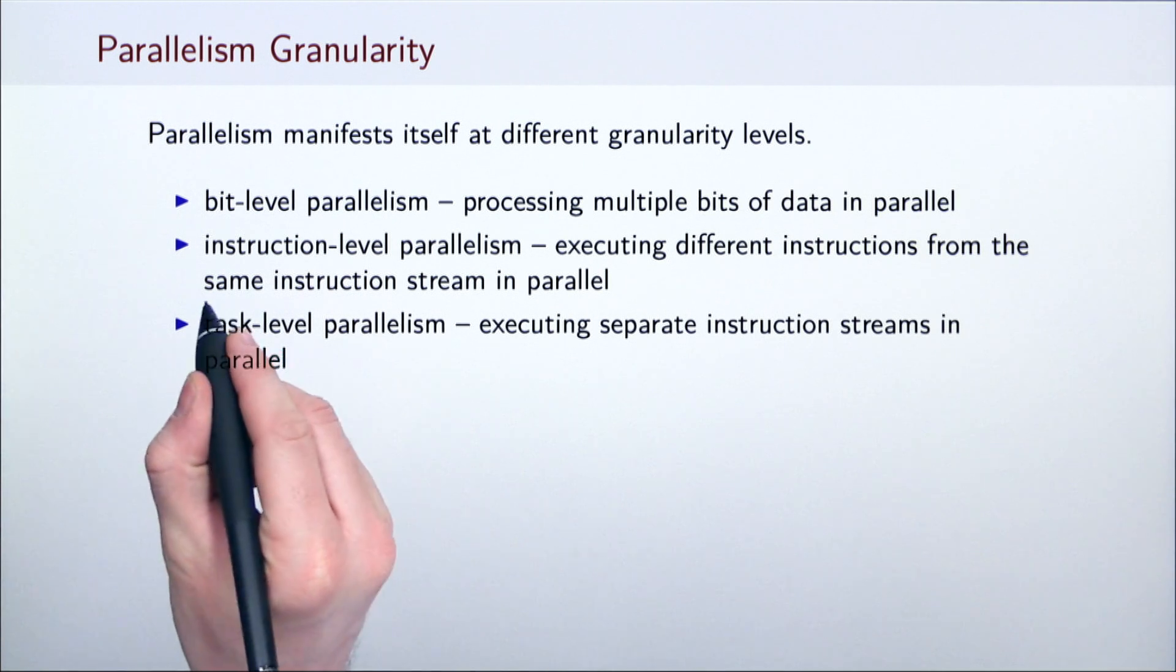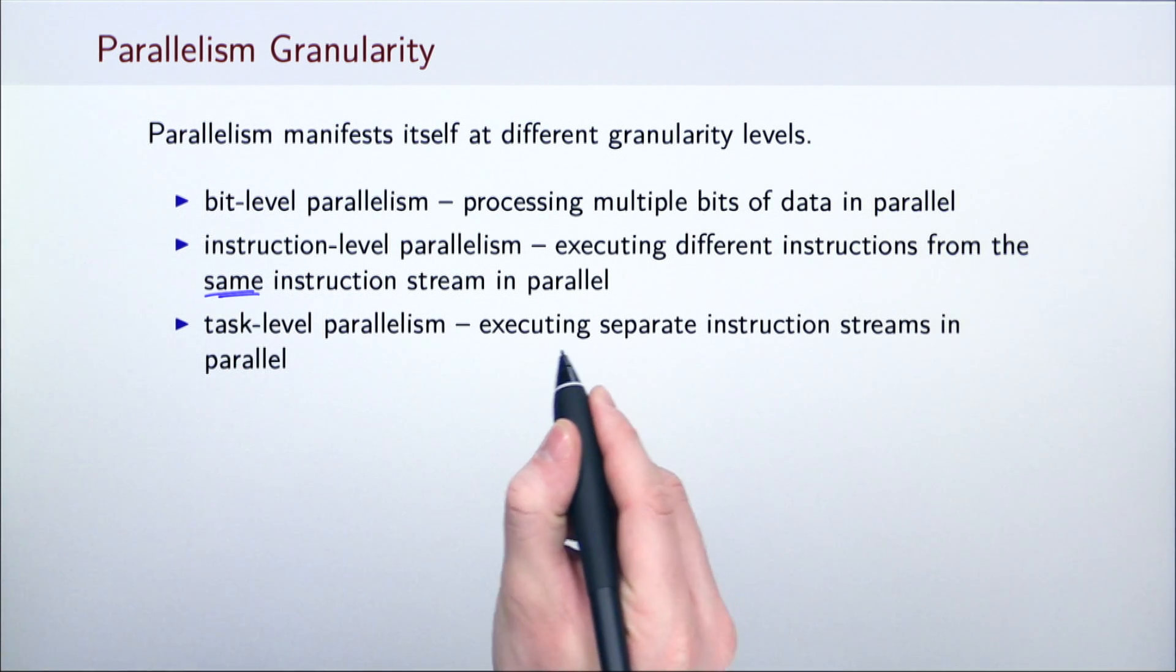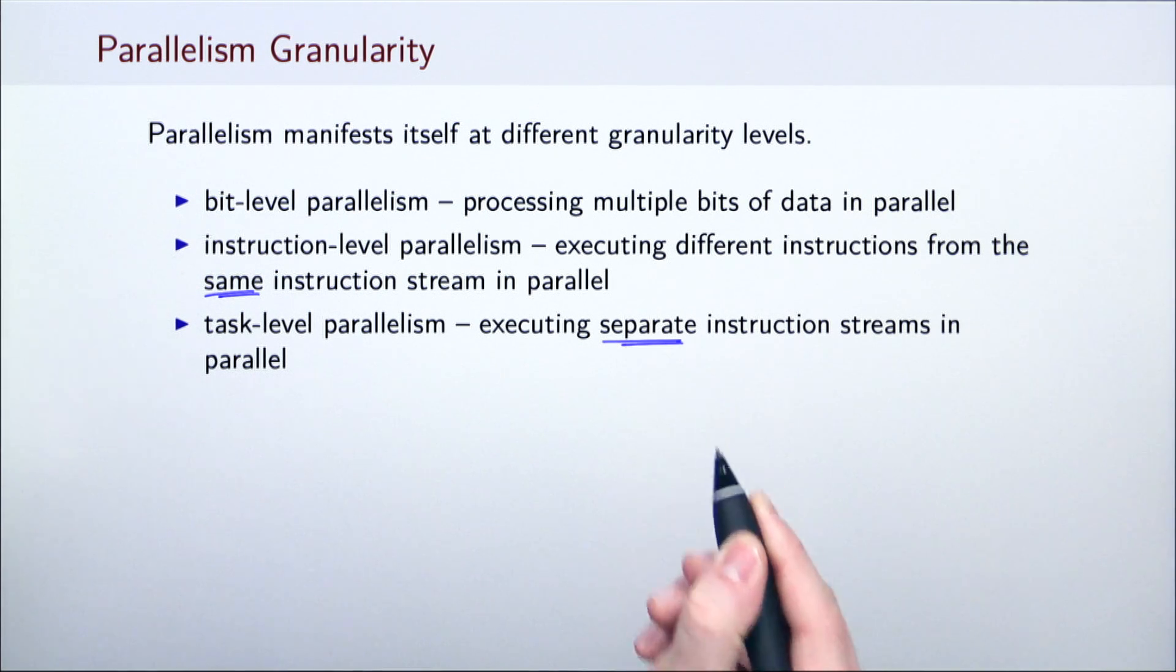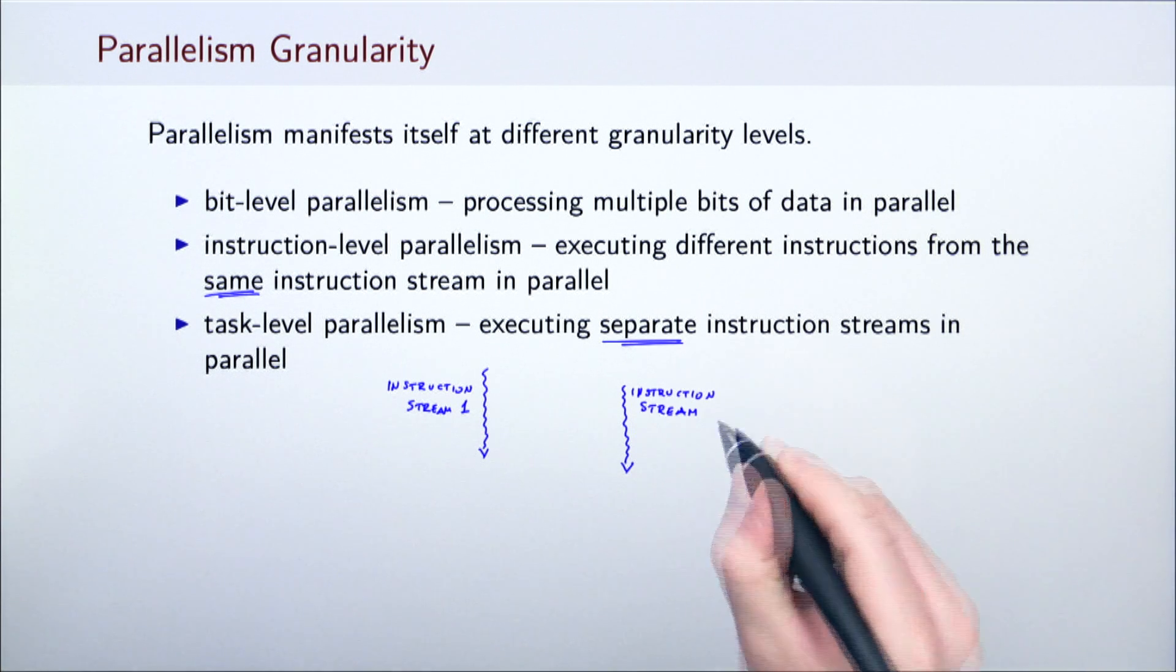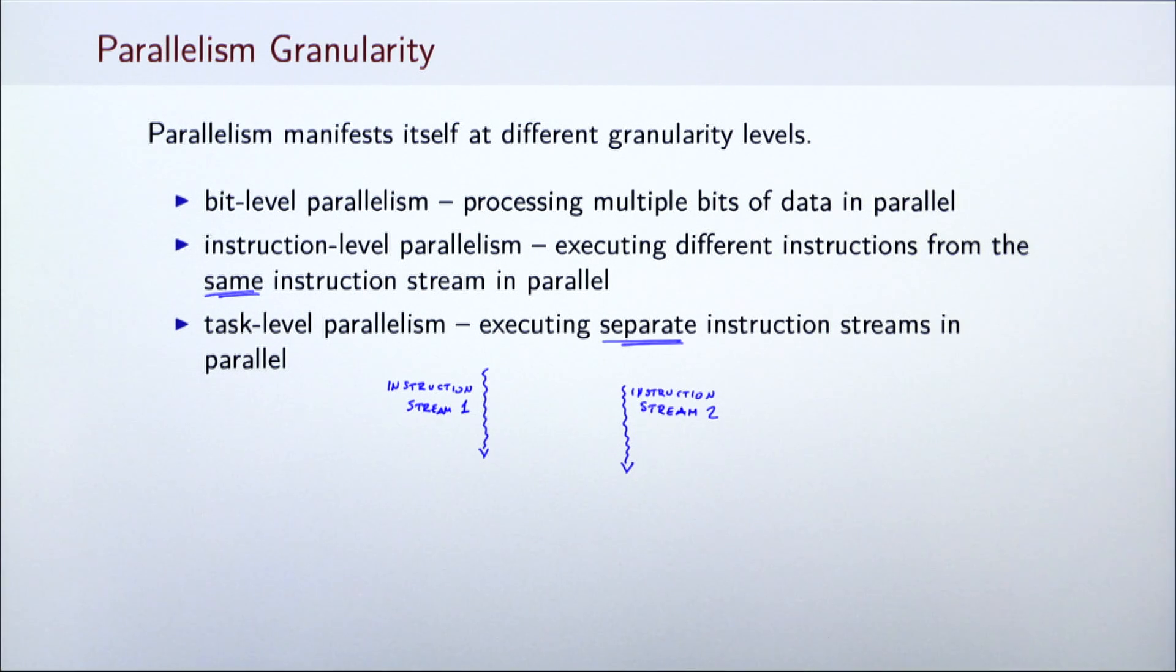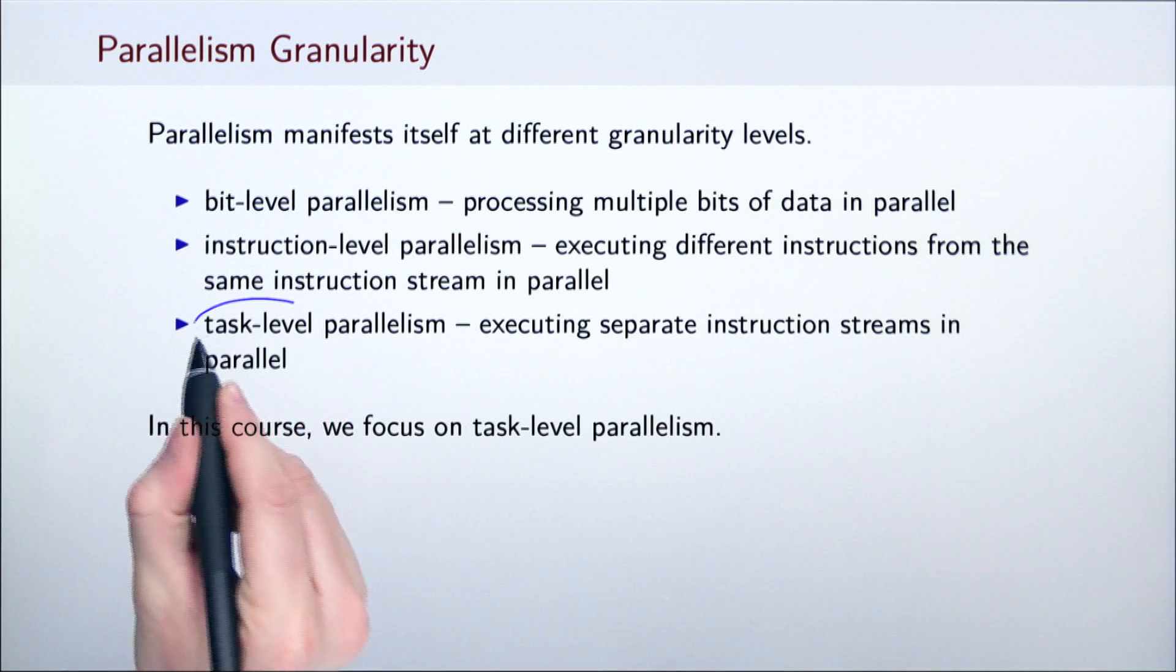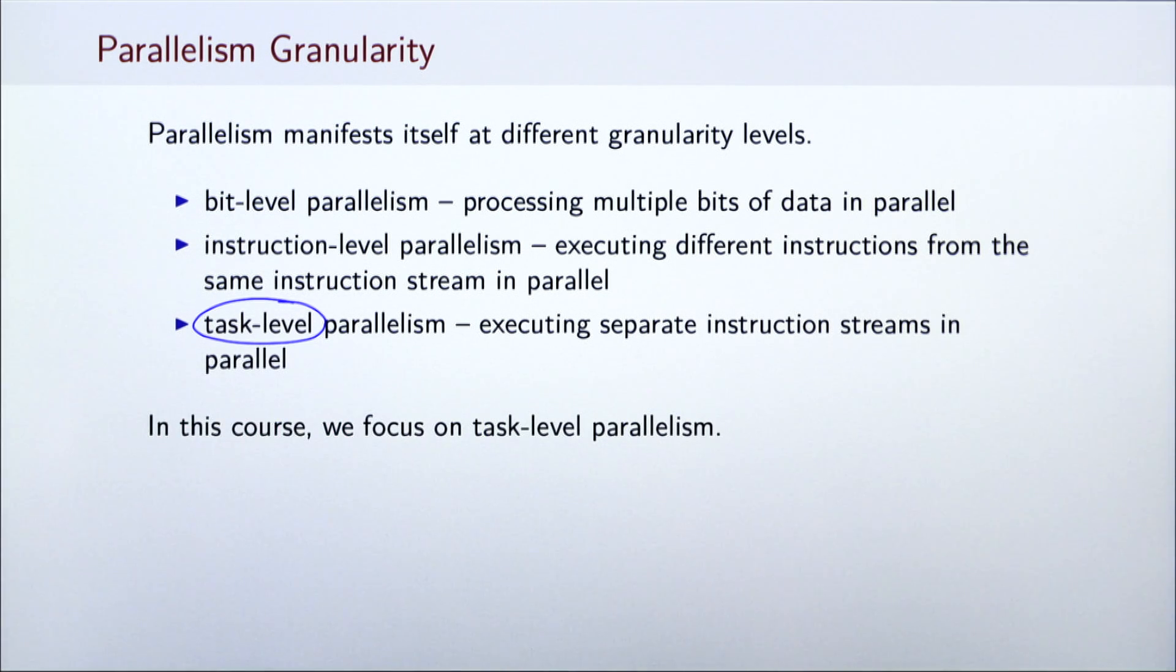Finally, task-level parallelism deals with parallel execution of entirely separate sequences of instructions. These instructions can execute on the same or entirely different data. Bit-level and instruction-level parallelism are exploited by the underlying parallel hardware. In other words, they are in most cases implemented inside the processor itself. This course will mainly focus on task-level parallelism, which is usually achieved through software support. This level of granularity will allow us to express general parallel algorithms.